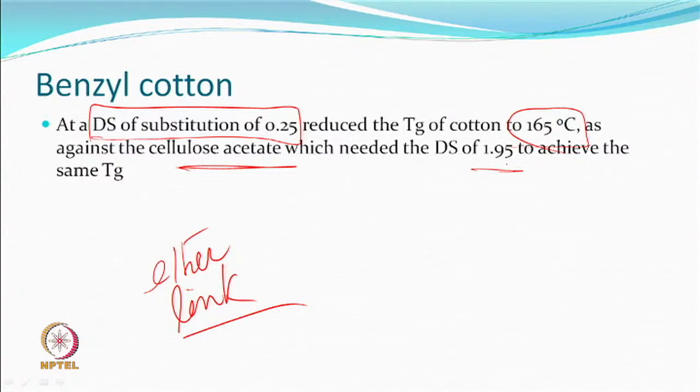Benzyl cotton — an ether link created using benzyl chloride — was found to be quite successful in making textured yarns. At a degree of substitution of 0.25, the glass transition temperature of cotton was found to reduce to 165°C. Compared to cellulose acetate, which requires a degree of substitution of about 1.95 or more to reach 165°C, benzyl modification is more effective because the aromatic ring creates a larger distance between molecules. Thus etherification by benzyl chloride was an effective way to modify cotton for thermomechanical texturing.